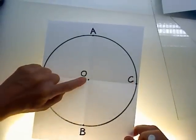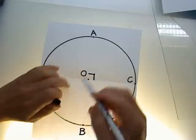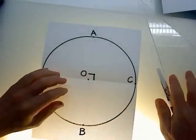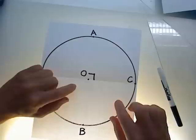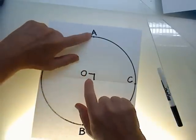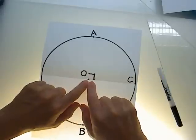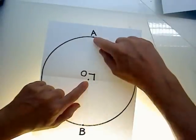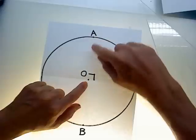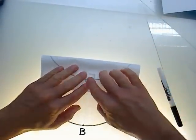AOC forms a right angle, so we'll draw the right angle symbol. Our next step, we need to find the midpoint of AO. To do that we bisect it again by placing point A onto point O.